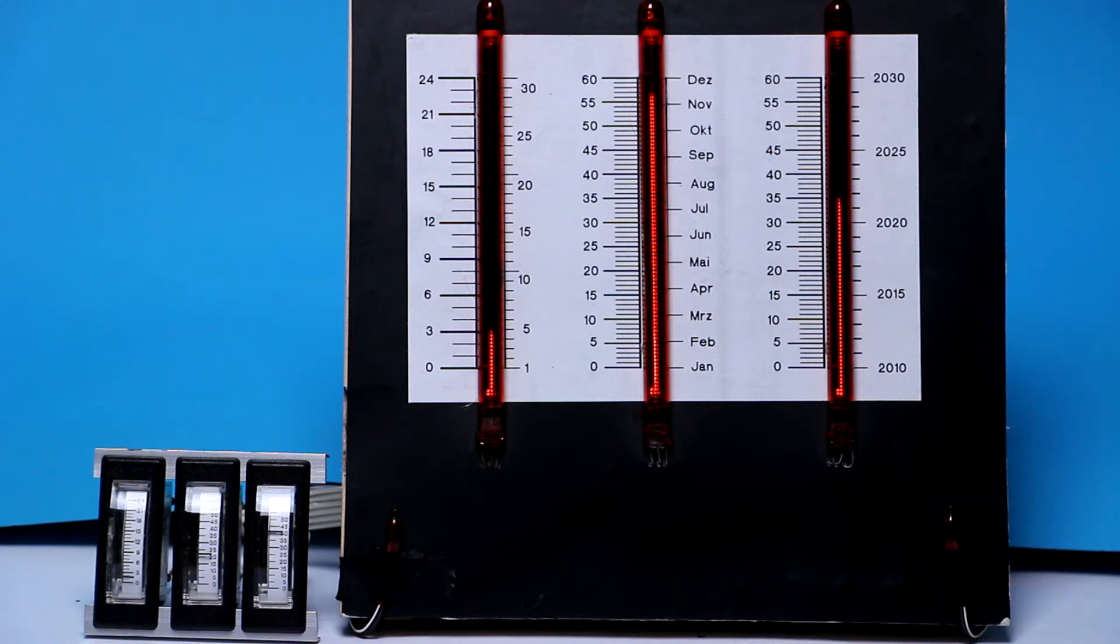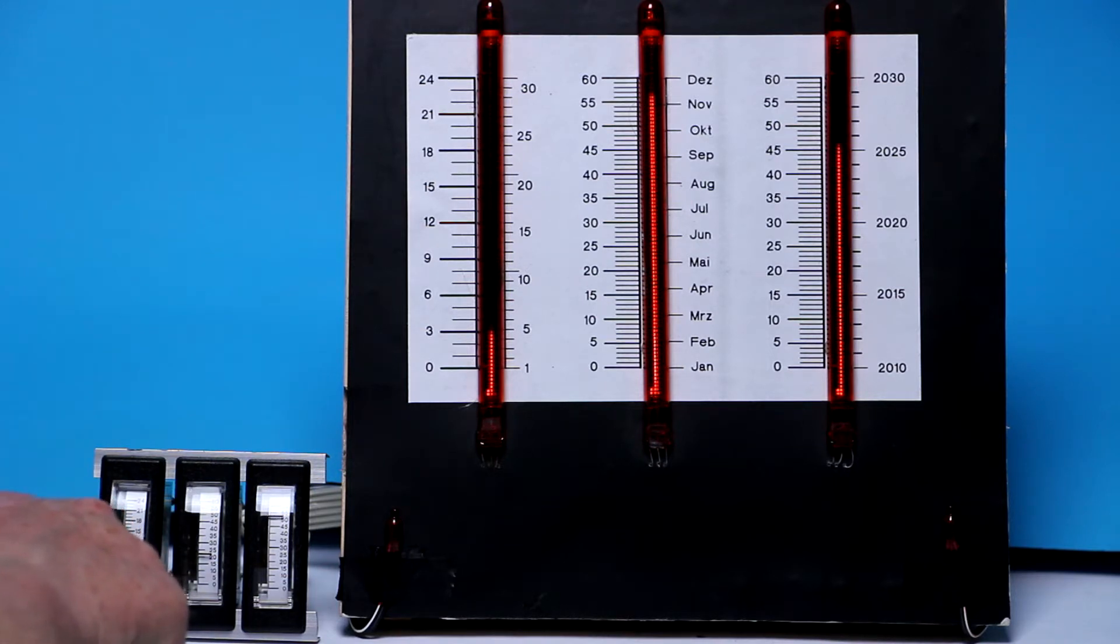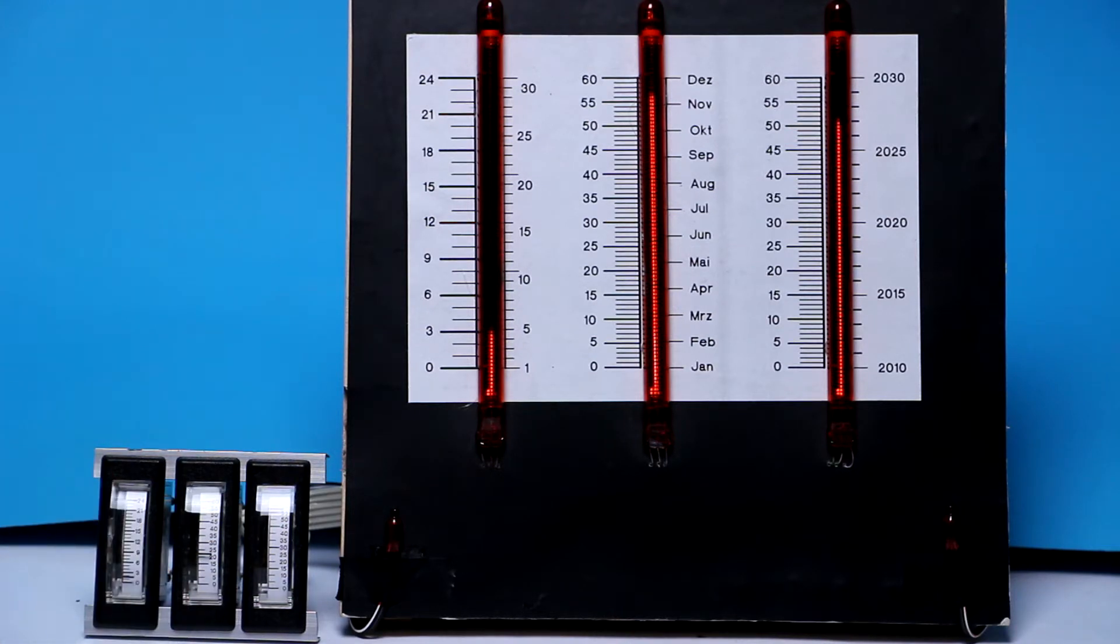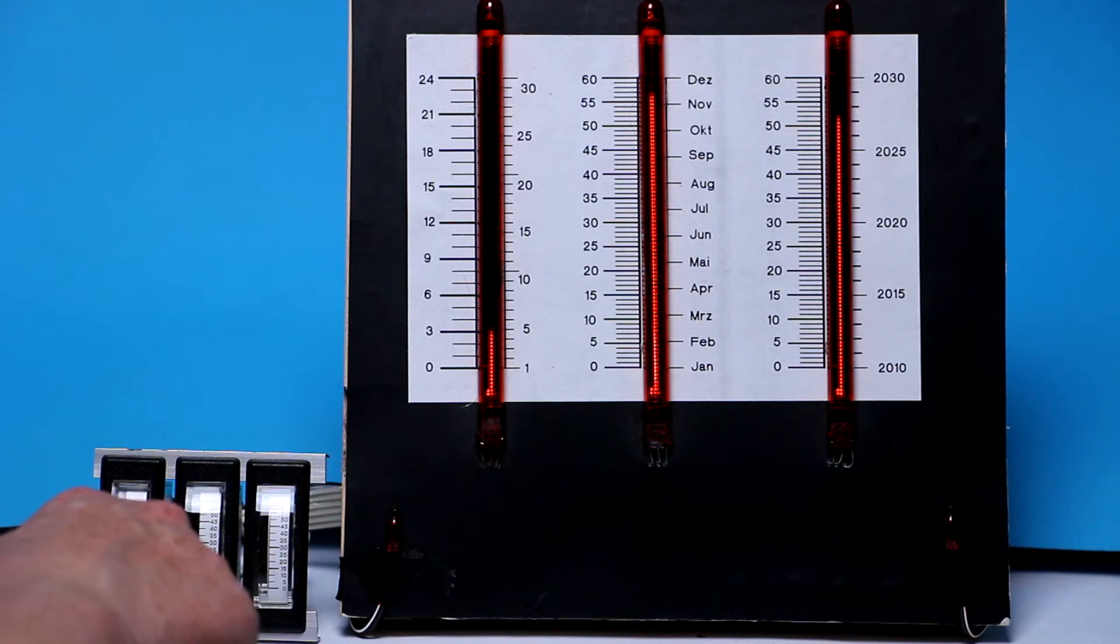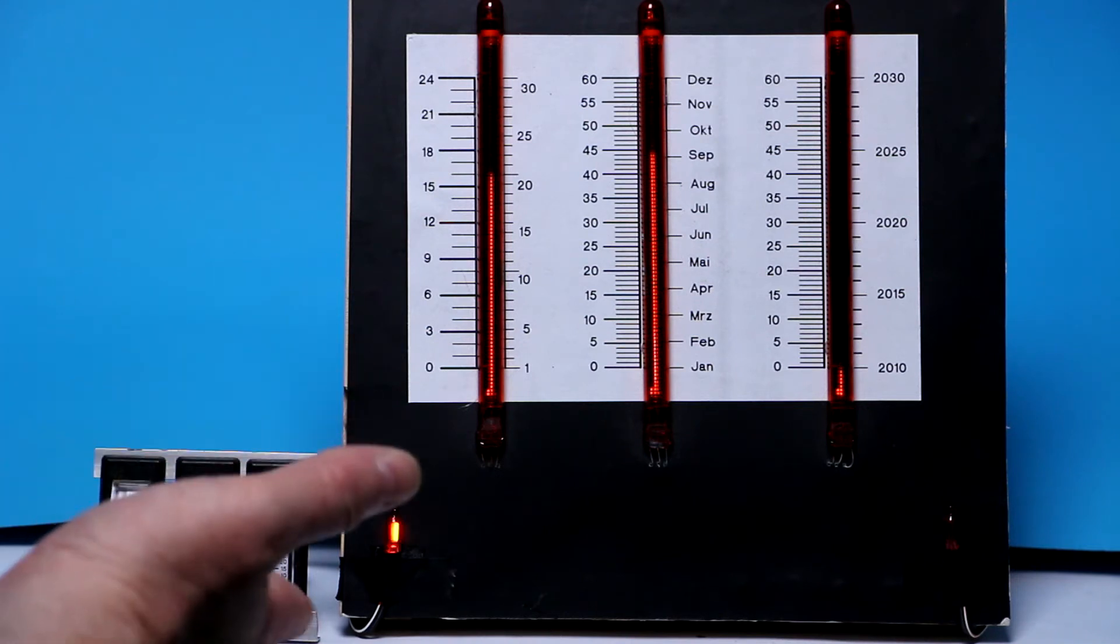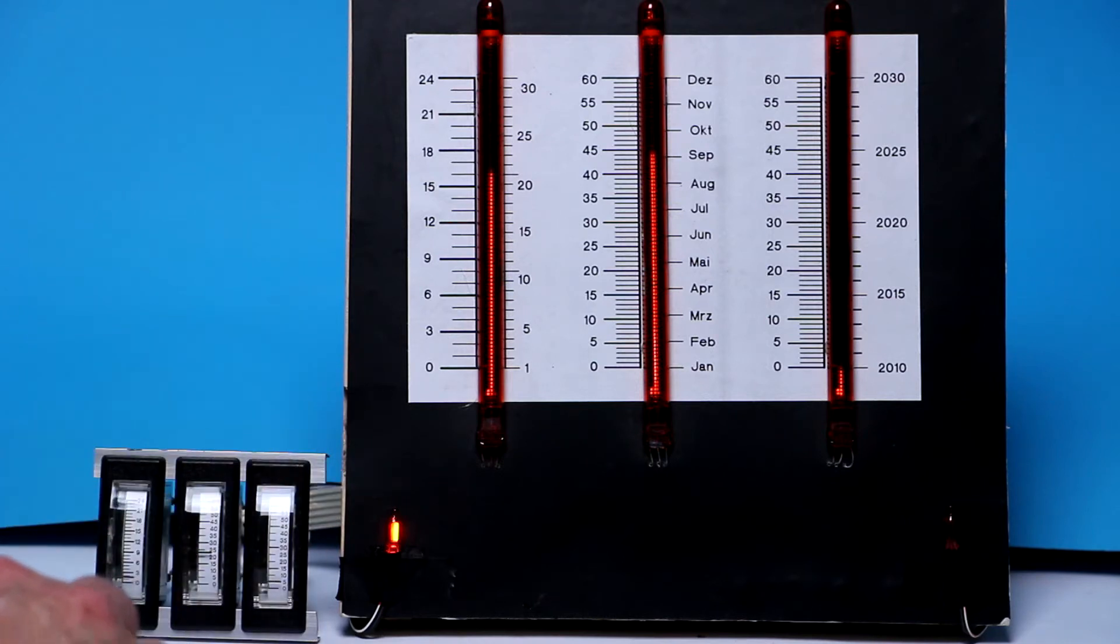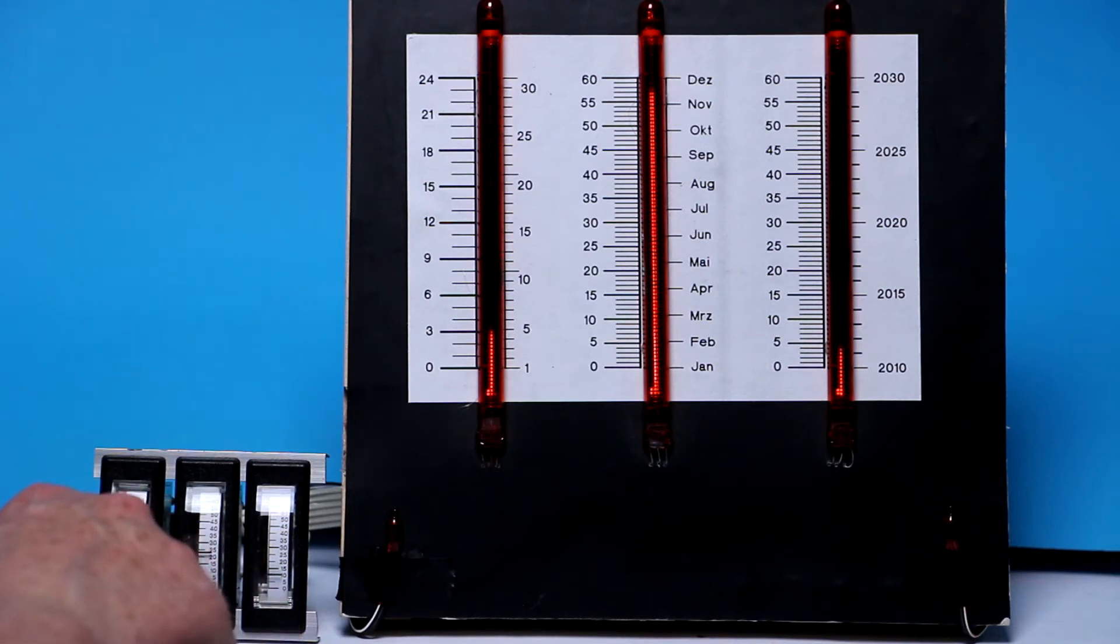Today I've brought with me my Nixie tube bar graph clock and for comparison a so-called meter clock built with moving coil meters, just for comparison because they work on the same principle. The time is displayed with the length of the bar graph here, and with the height of the dial here.